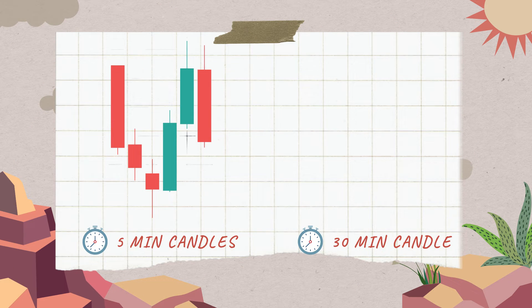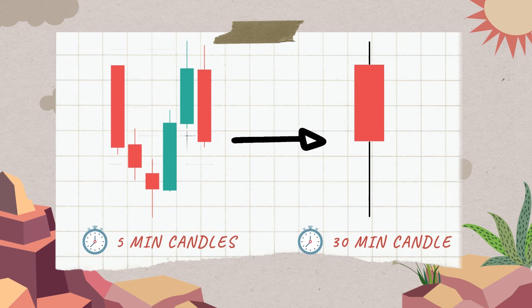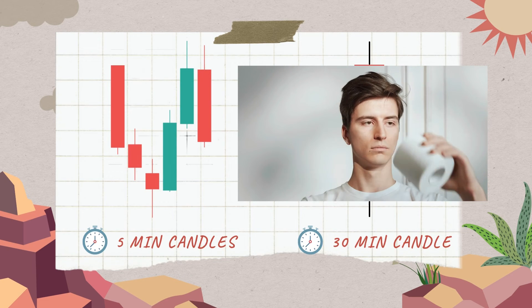If we have 6 of these 5-minute candles, we can have a 30-minute candle. And from this, we can imagine a lot of crazy actions could be within that 30 minutes.